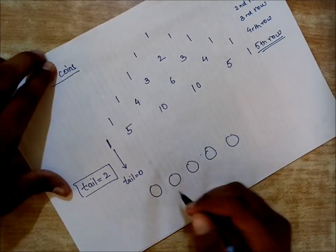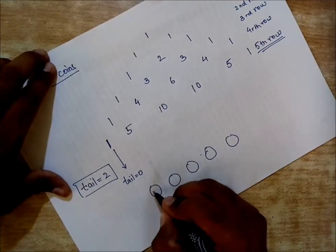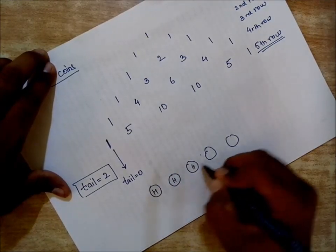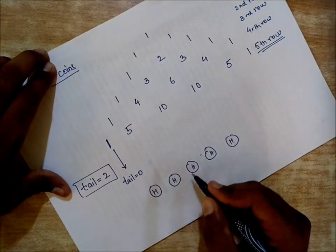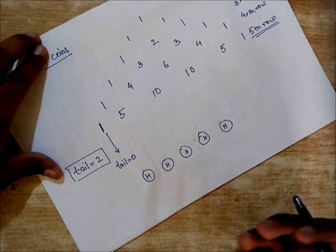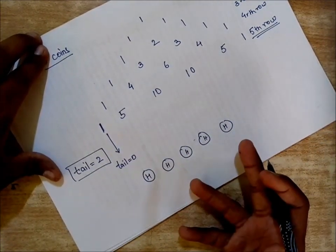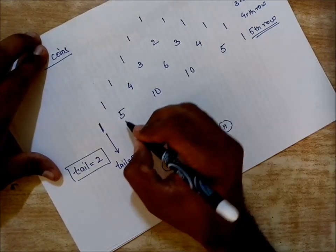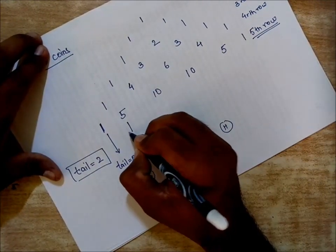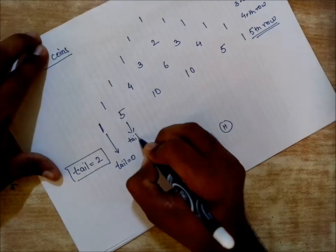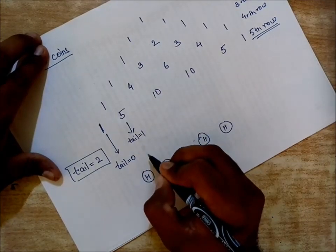And tails are zero, that means all are heads. This is the only way, the only possible combination when tail is zero.